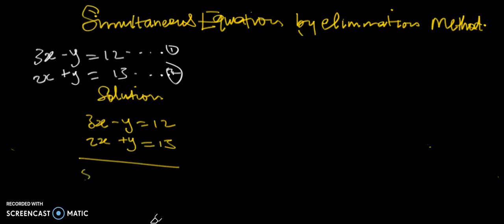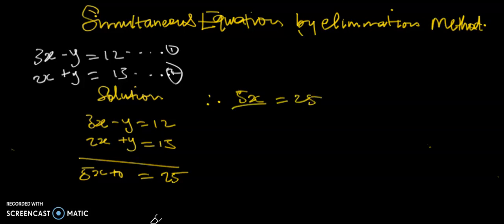Adding the two equations together, negative y plus y is zero, so the y terms cancel. We get 5x equals 12 plus 13, which is 25. Therefore 5x equals 25. Dividing all through by 5 gives 25 divided by 5, which is 5. So our value for x is equal to 5.